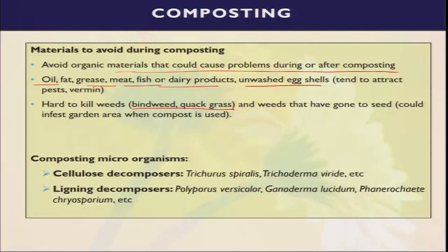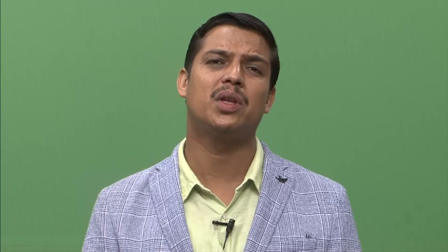Composting microorganisms include cellulose decomposers such as Trichoderma spirale and Trichoderma viride, and for lignin decomposition, Polyporus versiculor, Ganoderma lucidum, and Phanerochaete chrysosporium. In every organic material there is a lot of cellulose and lignin, which are complex in structure and very tough to decompose directly in the soil. But when we go for this cellulose or lignin-rich product through the process of composting and apply in the soil, the plant can easily take the nutrients after their decomposition.